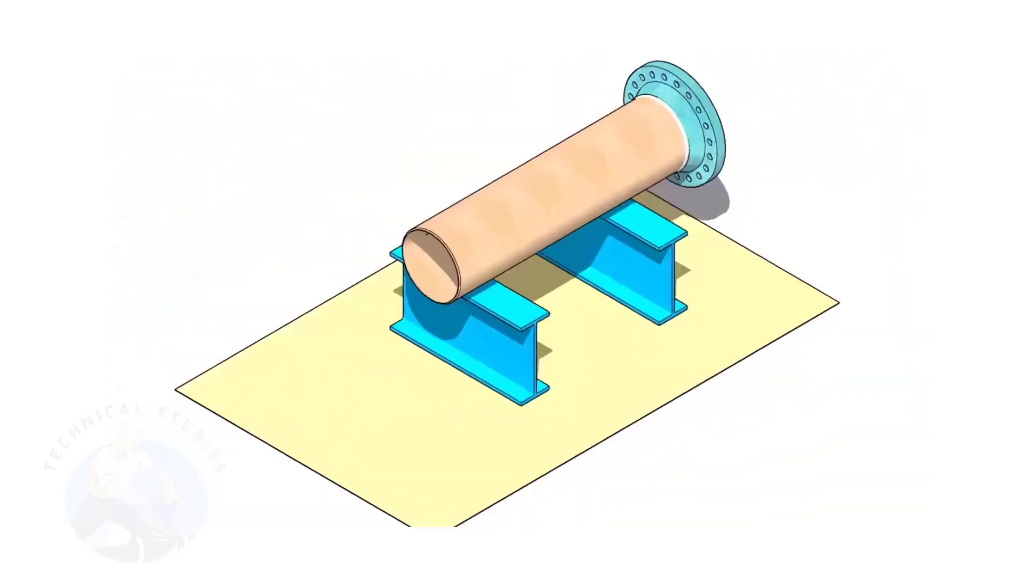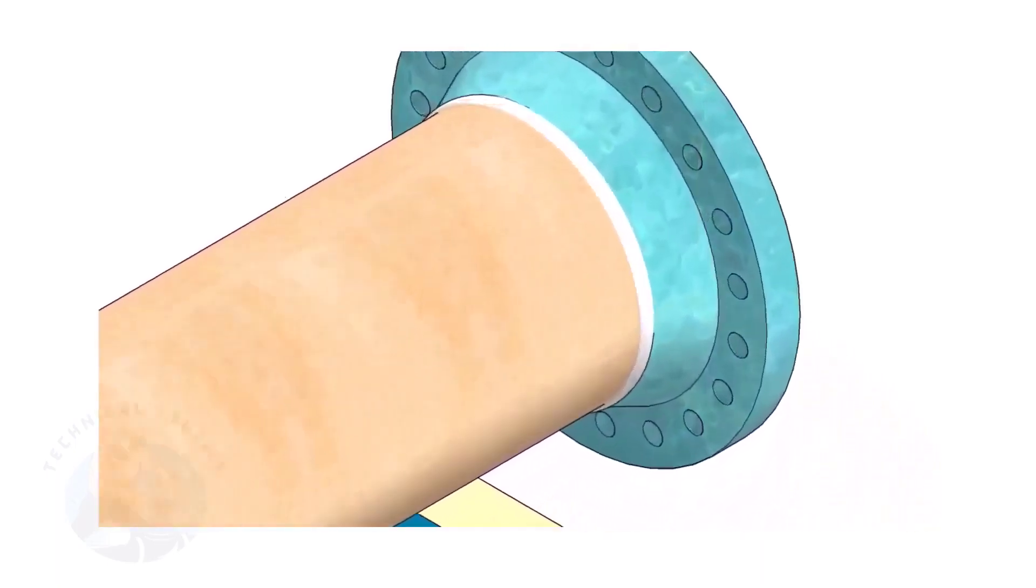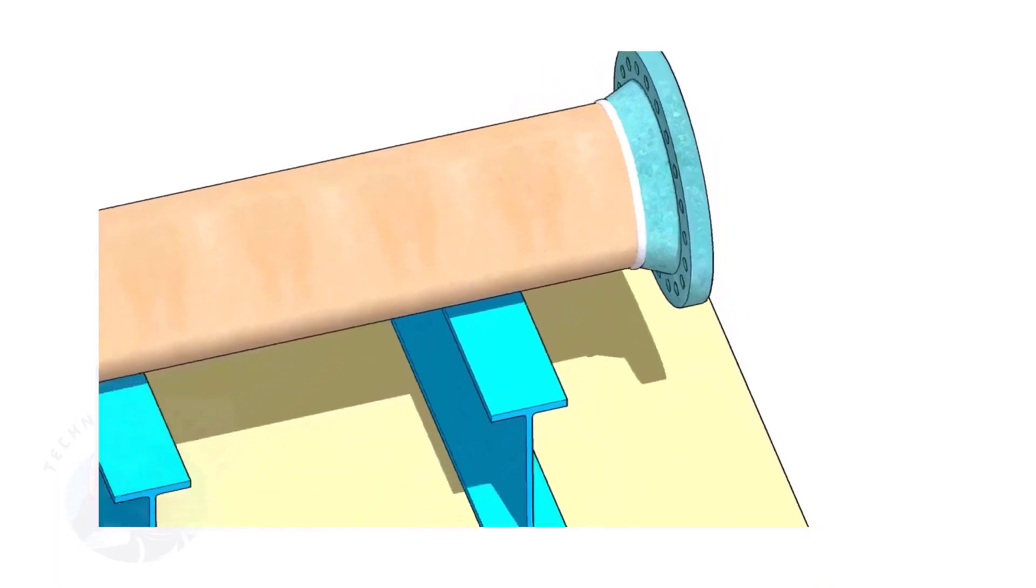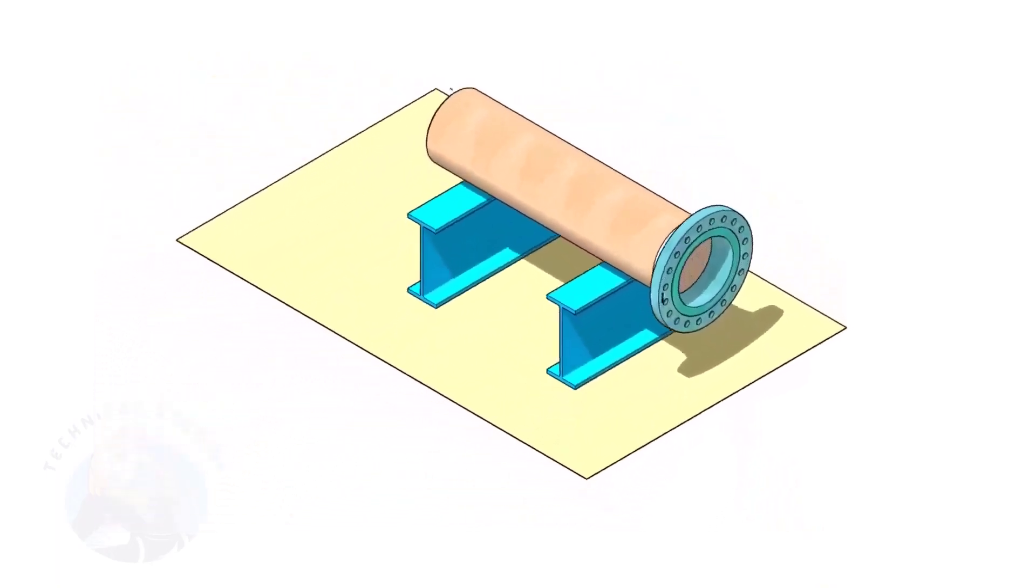Assume that the flange is welded to the pipe. Put the spool on suitable supports. Correct the plumbness of the flange.